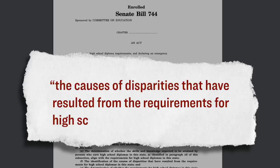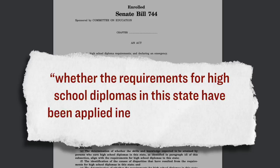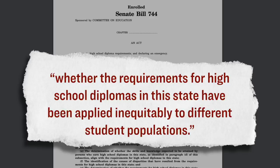Specifically, what this bill does is it suspends the graduation requirements for the next three years while a review is being conducted by the Oregon Department of Education. Officials there must identify the causes of disparities that have resulted from the requirements for high school diplomas in the state and whether the requirements have been applied inequitably to different student populations. The education department should use a process that is equitable when developing recommendations for changing the requirements for a high school diploma, which they will now have three years to do.